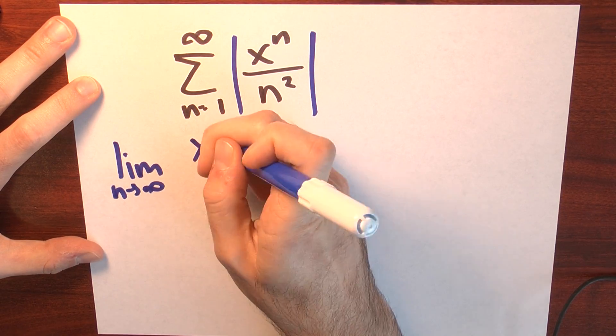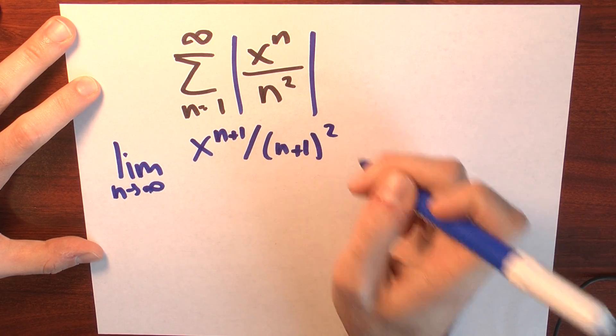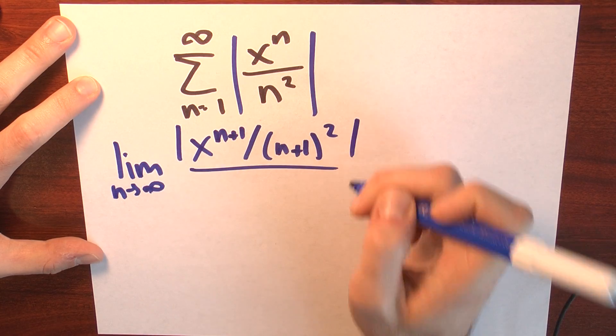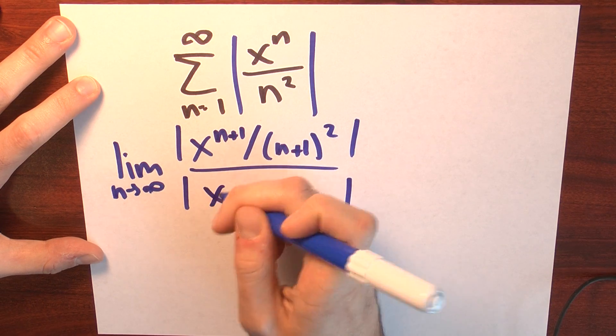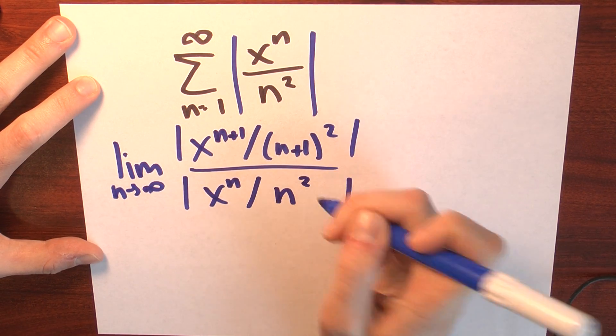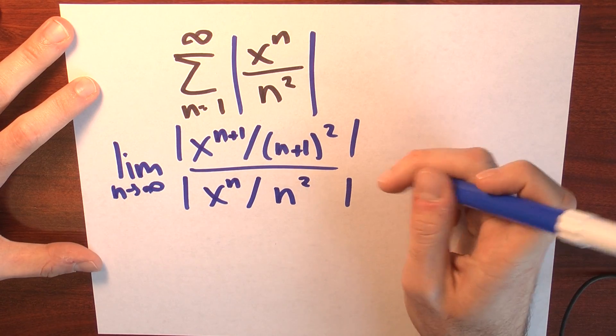The n plus first term is x to the n plus 1 over n plus 1 squared. And I'm going to divide that by the nth term, which is exactly what I've got there. x to the n over n squared. And now I can simplify that fraction a bit.